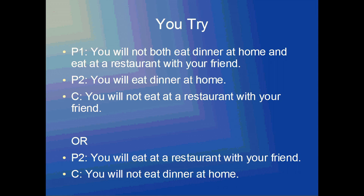The conjunctive syllogism we have here is — premise one: you will not both eat dinner at home and eat at a restaurant with your friend. We confirm in the second premise that you will eat dinner at home, so that means in the conclusion you're not going to eat at a restaurant with your friend. Or if instead we find out in the second premise that you will eat at a restaurant with your friend, that's supposed to eliminate the possibility that you will eat dinner at home — so the conclusion is: you will not eat dinner at home.